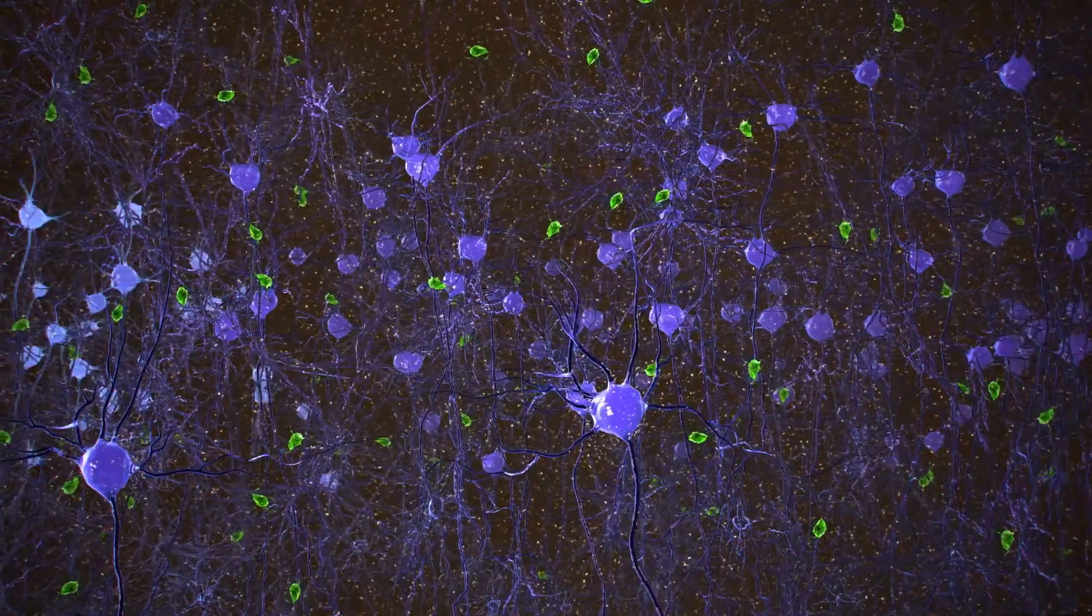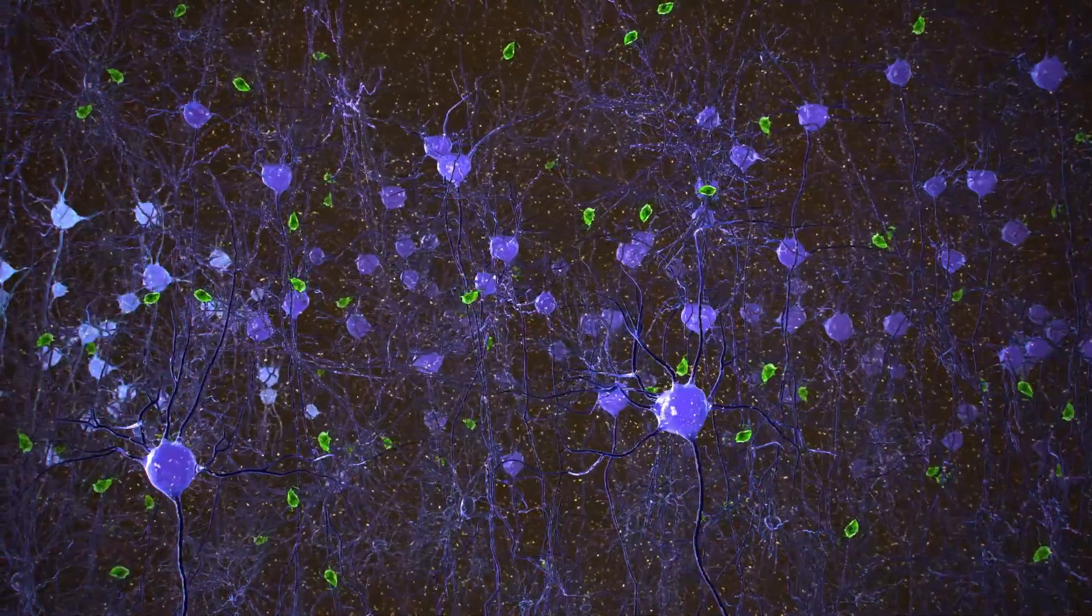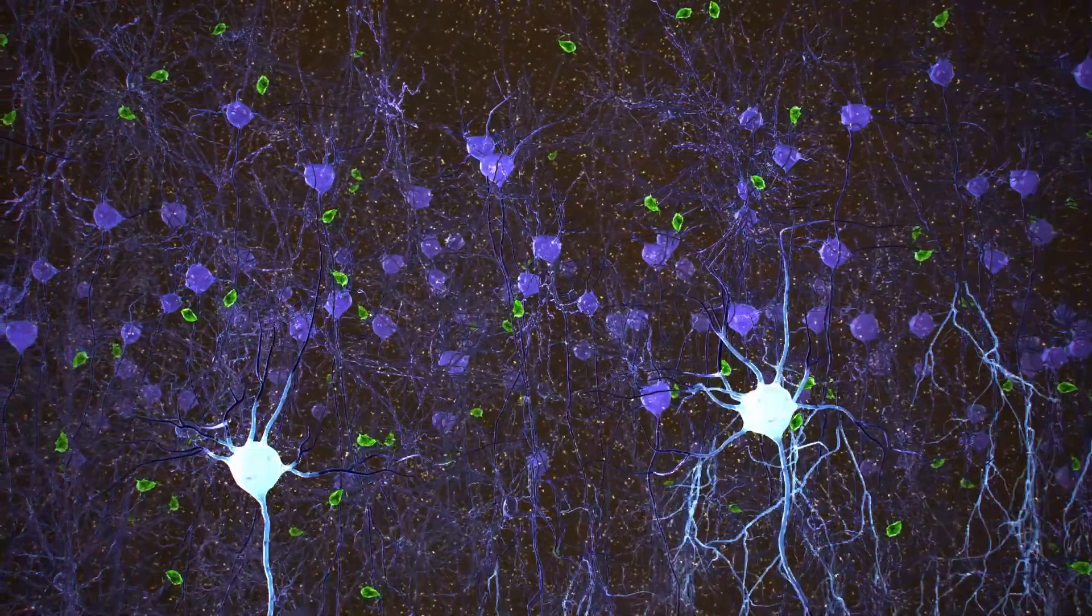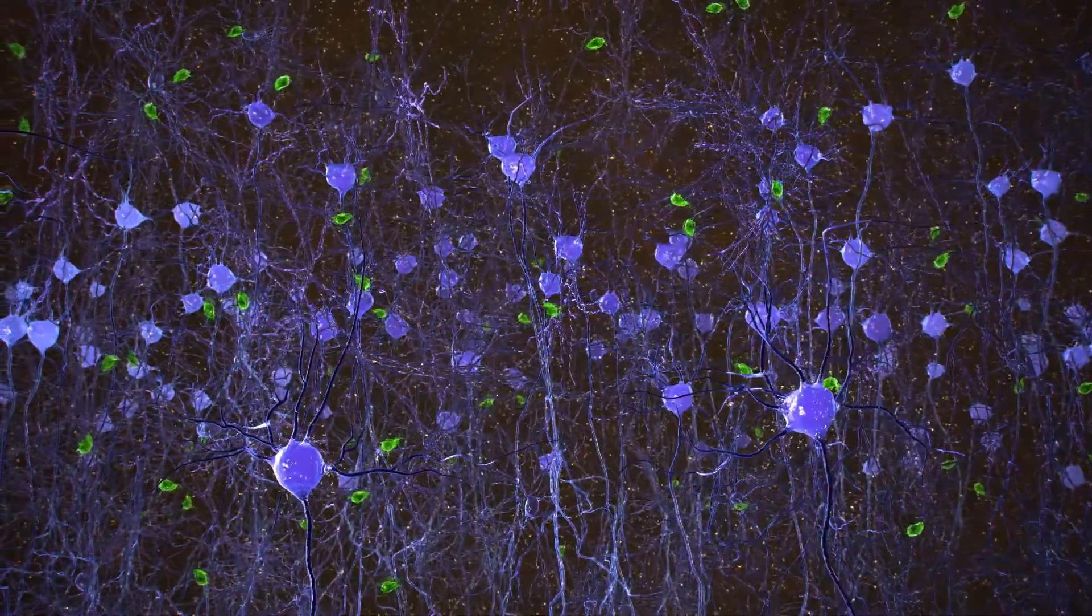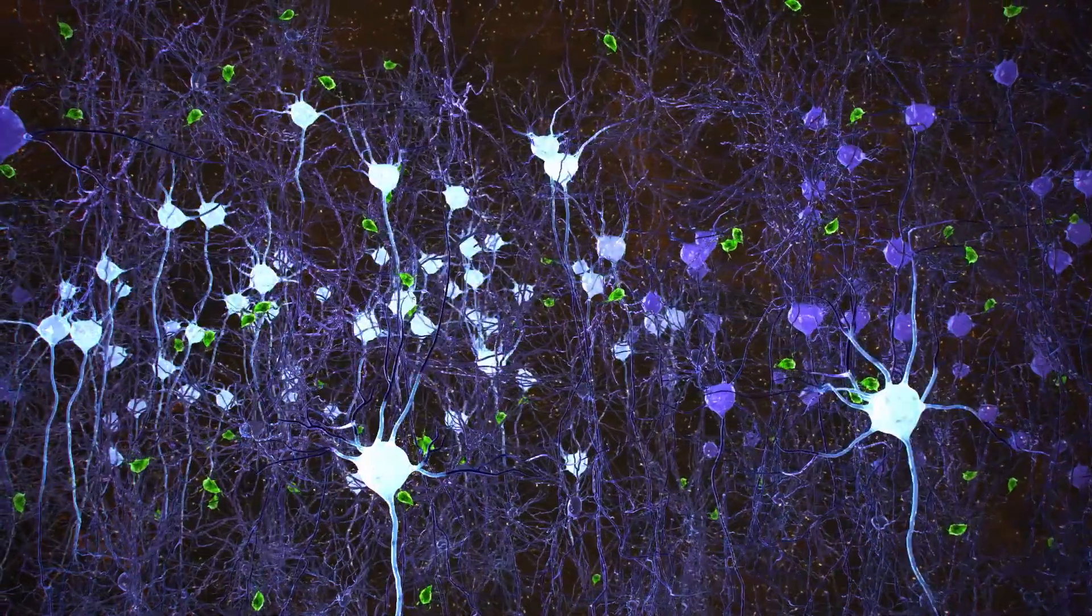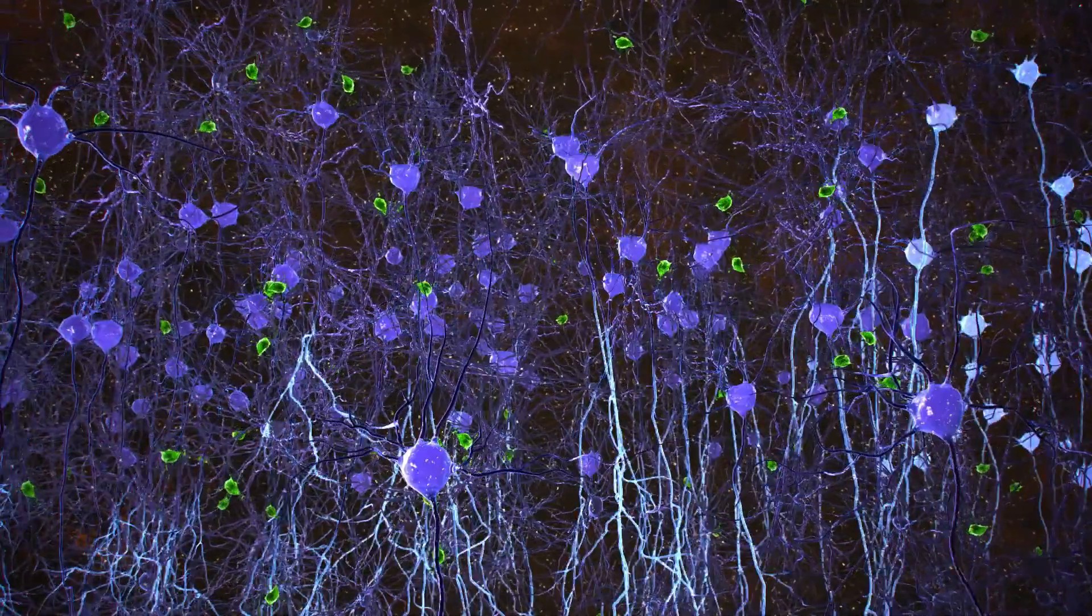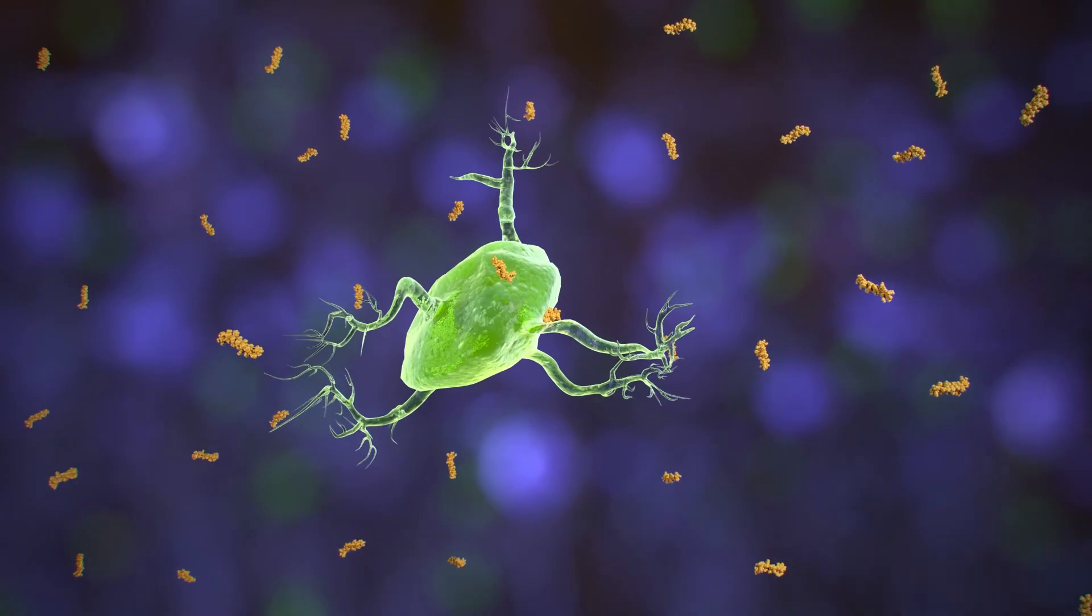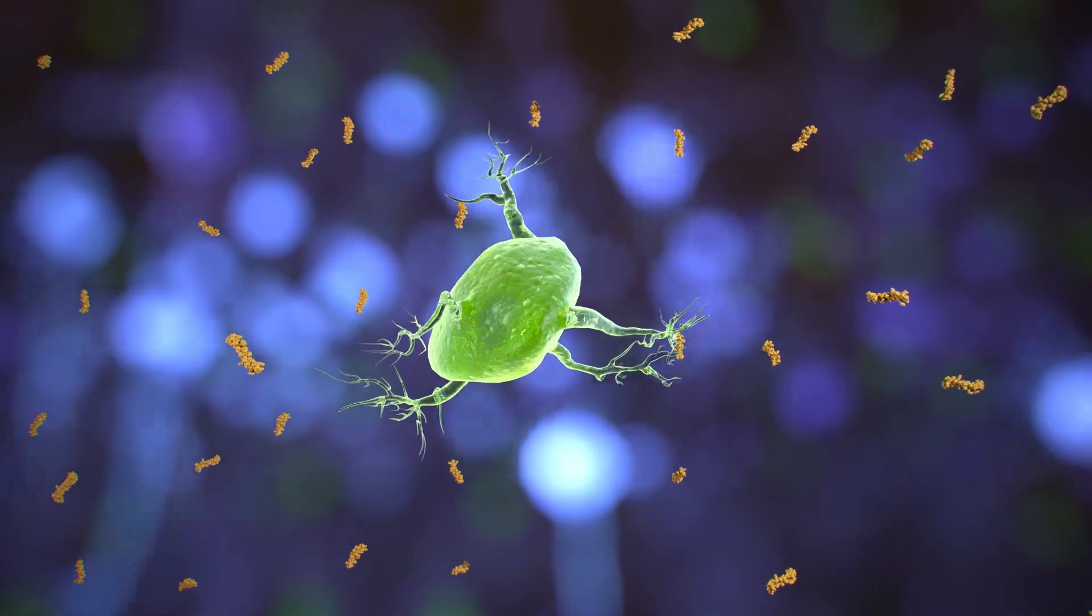5X FAD Alzheimer's mice were exposed to 40 Hz flickering light, which caused enhanced gamma rhythm neuronal activity and reduced amyloid beta levels by over 50% in the visual cortex. In addition, the 40 Hz flickering light treatment caused microglia in Alzheimer's mice to become more active and dramatically increase in size by engulfing amyloid beta.